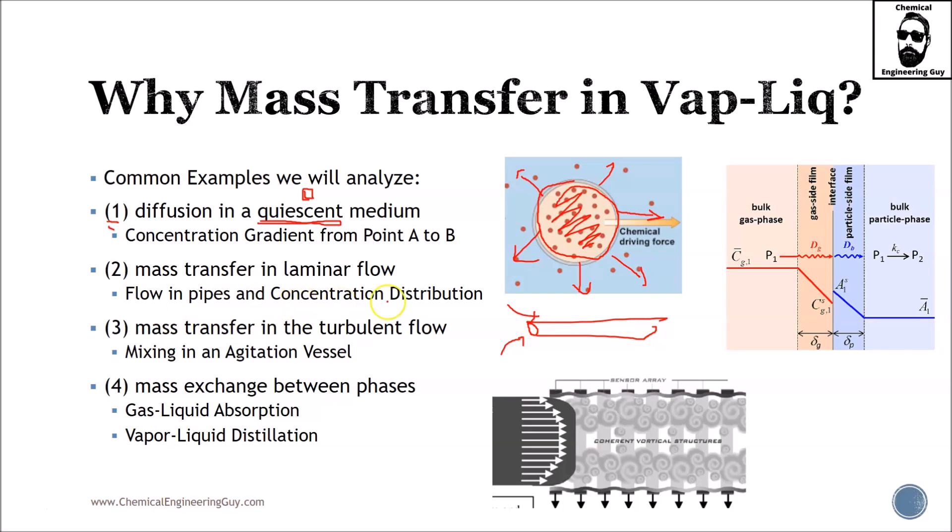Number three is mass transfer in turbulent flow, which is the one we intend to favor, for instance, mixing in an agitation vessel. You have your vessel with reactants A and B.